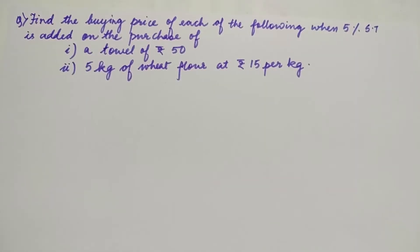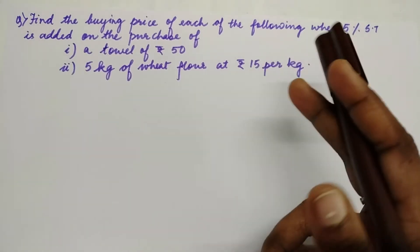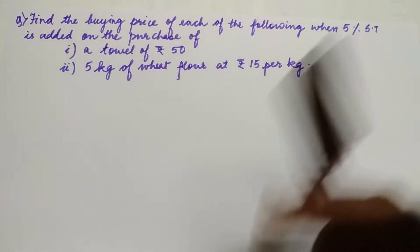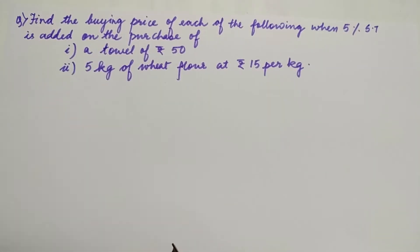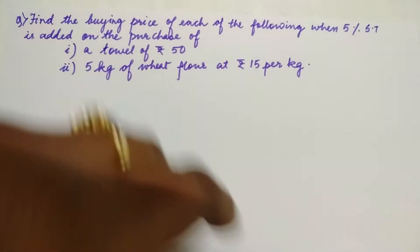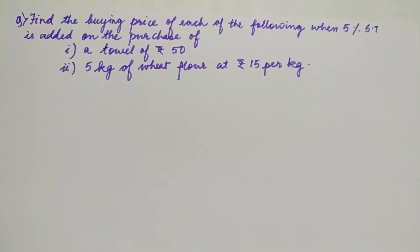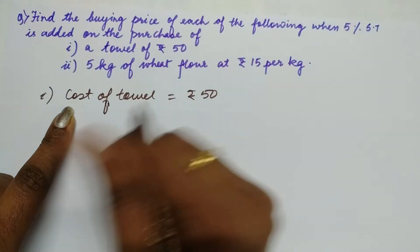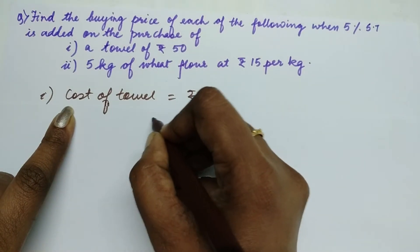In this given question, find the buying price of the articles where 5% sales tax is added. When you buy a towel of ₹50, how much are you going to pay actually for it? The cost price of the towel is ₹50 and the sales tax is 5%.